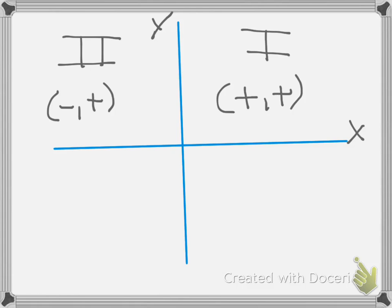That would make this one quadrant three. Going in a counter-clockwise fashion. Three. It's quadrant three because here we see both of our components are negative.